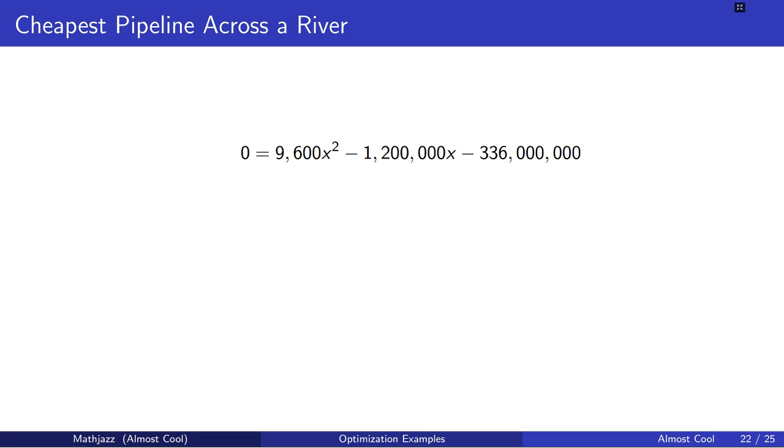So we use the quadratic formula on this quadratic equation to get x is 125 plus or minus 25 times the square root of 249, all divided by 2.